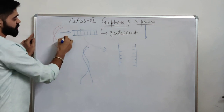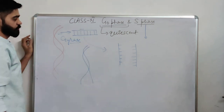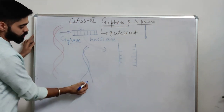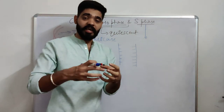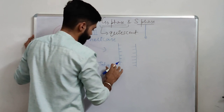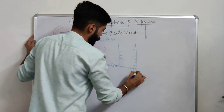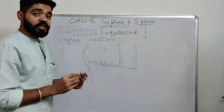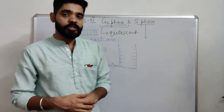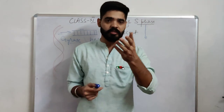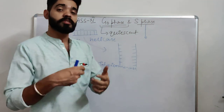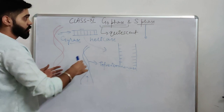The enzyme known as gyrase opens the supercoiled DNA, helicase unwinds the double helix, and topoisomerase removes tightness. These are just a few of the enzymes in the replication machinery. Full details of replication, transcription, and translation — the central dogma — will be covered in Class 12.